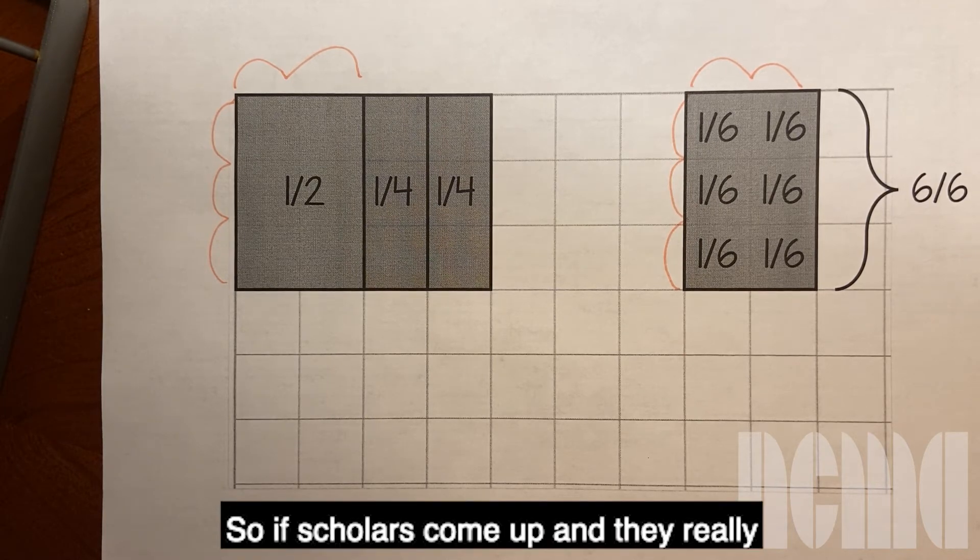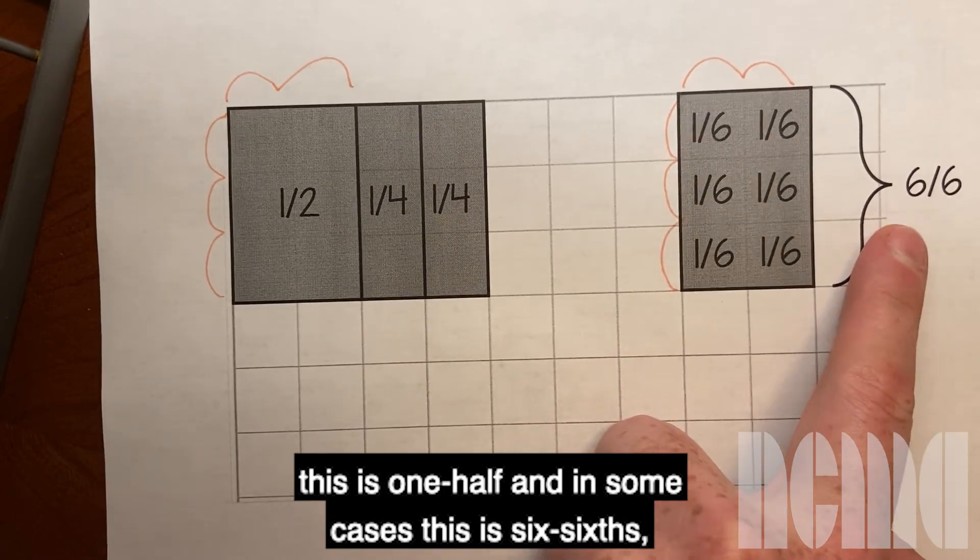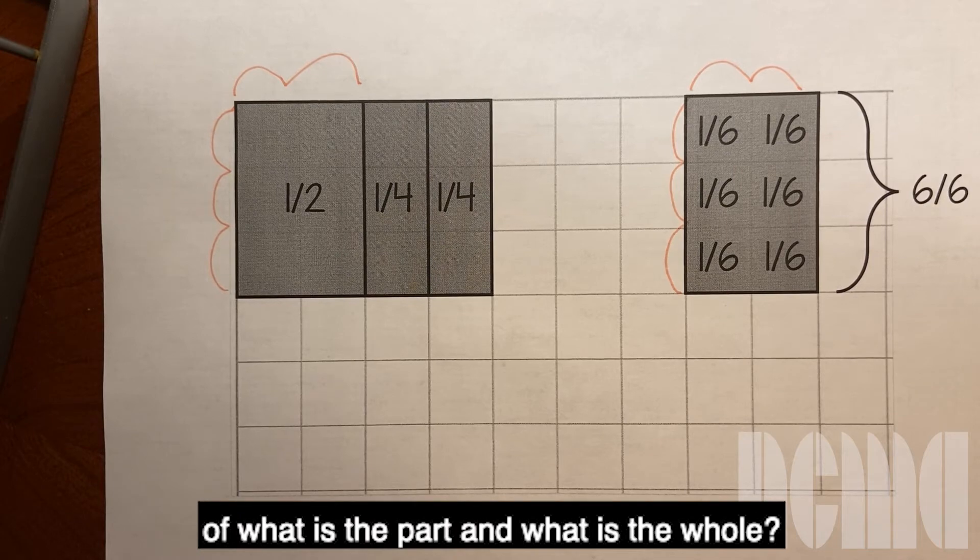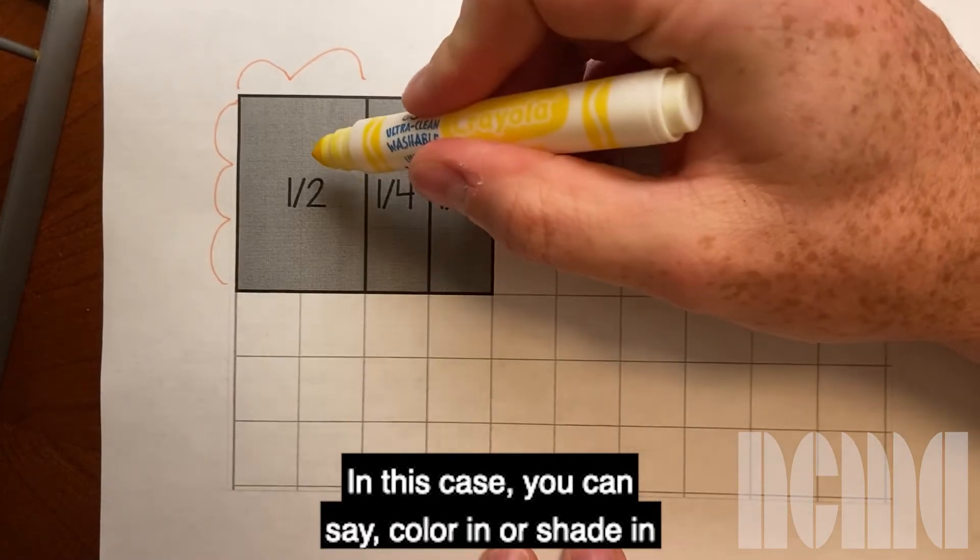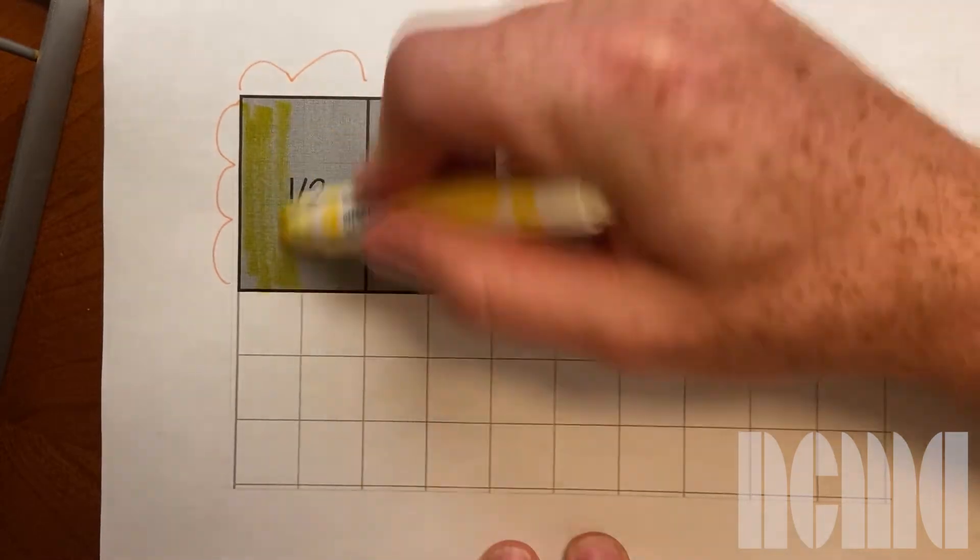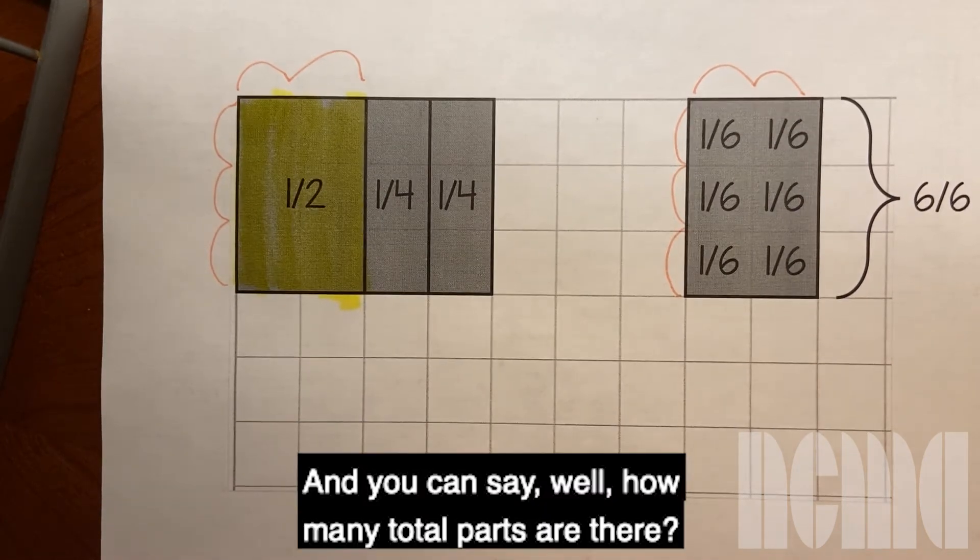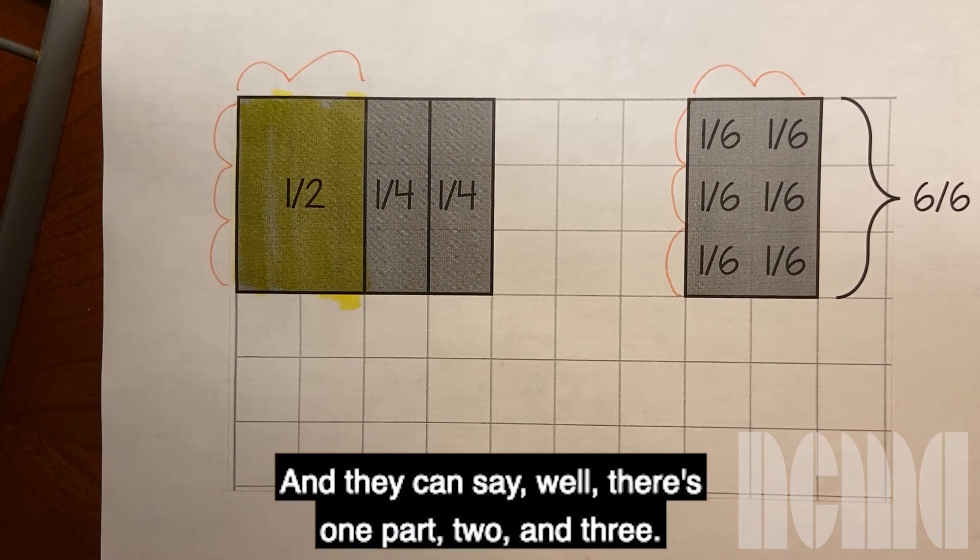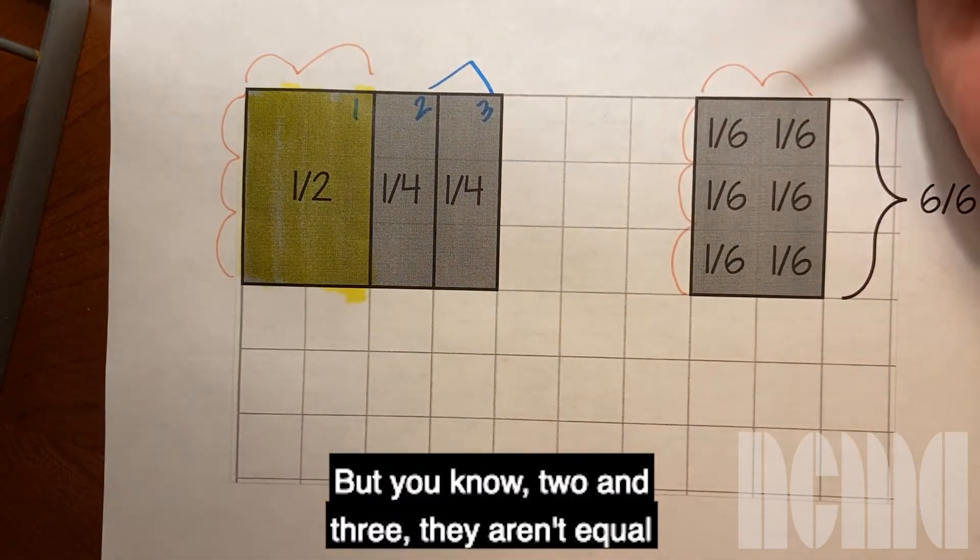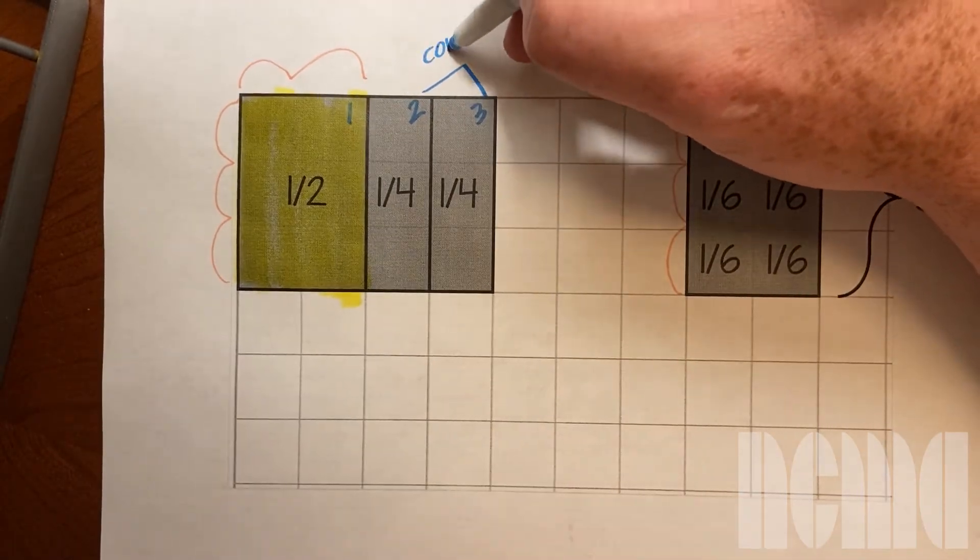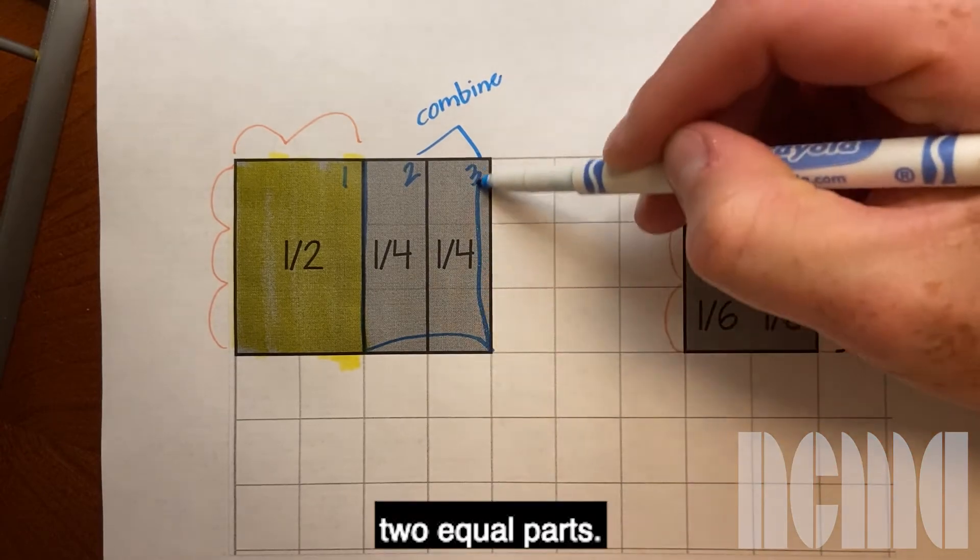So if scholars come up and they really are not understanding why in some cases this is one half and in some cases this is six sixths, you can push them to the question of what is the part and what is the whole. In this case you can say color in or shade in your part that you're talking about. Okay so they'll shade in this one part and you can say well how many total parts are there and they can say well there's one part, two and three but two and three aren't equal to this one part but if I combine them, if I combine them then I can make two equal parts.